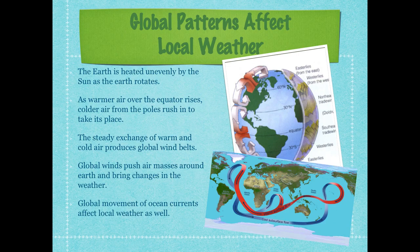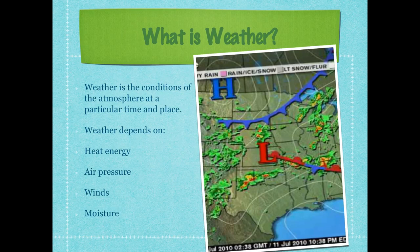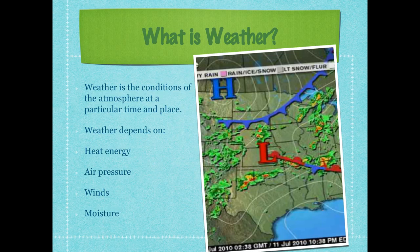Global convection of ocean currents and atmospheric currents both affect the weather. Weather is more temporary — it's the conditions of the atmosphere at a particular time and place. Looking at a weather map, you'll see H for high pressure, L for low pressure, cold fronts, warm fronts, and stationary fronts. Weather depends on four factors: heat energy, air pressure, winds, and moisture. If any one of those factors changes, the weather changes — which is why weather can change very quickly.